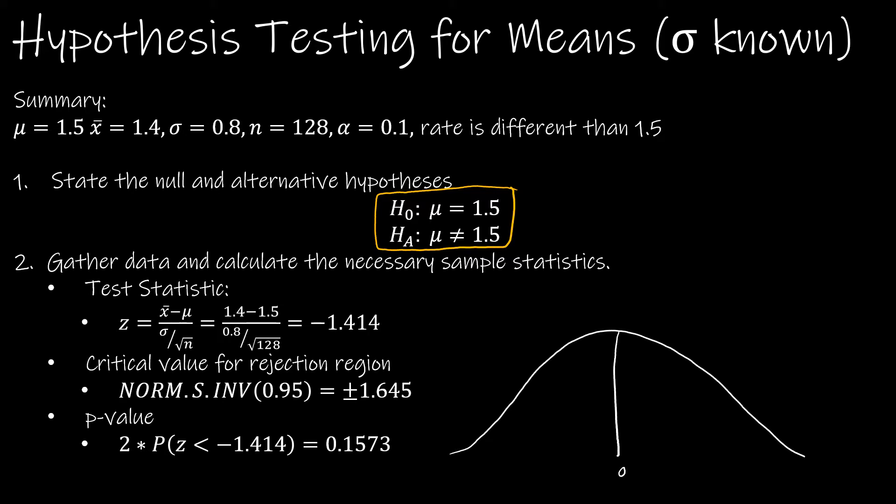So typically what we do is we have a right-tailed test and we say, let's put all of alpha over here. Or we have a left-tailed test and we say, let's put all of alpha over here. Well, this is a two-tailed test. We're saying, how different is it from 1.5? Is it significantly different than 1.5? Which means I have to put half of alpha here and half of alpha here. So that's going to make a little bit of a difference.